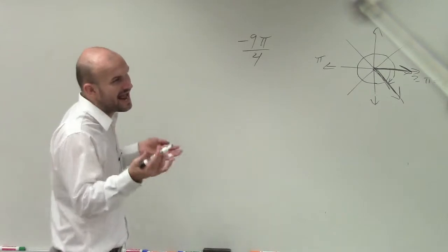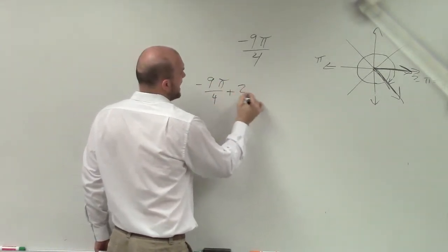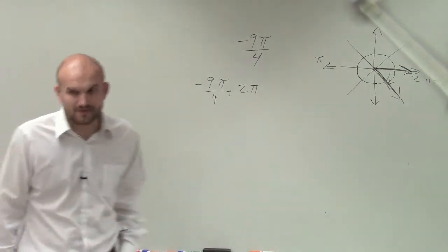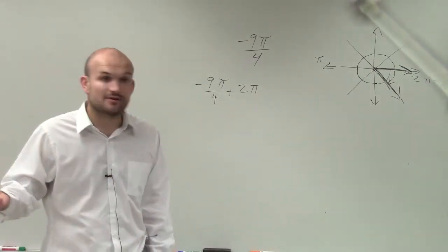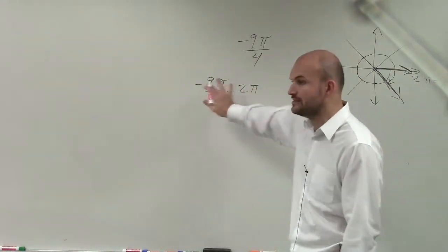No, I'm sorry, add 2 pi. If I take 9 pi over 4, and if I add 2 pi, is that still going to give me a negative angle? Yes, because your angle is greater than 2 pi. So now, this is where it gets tricky with a lot of students, is you need to add these.